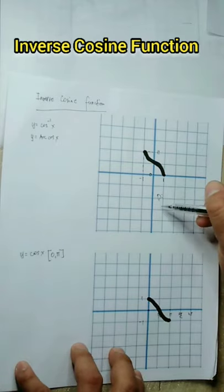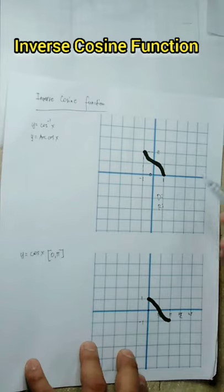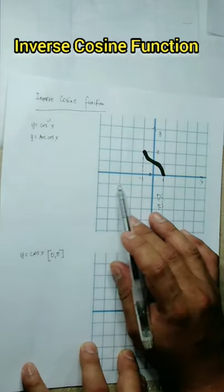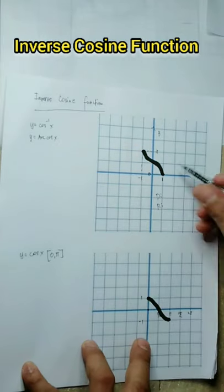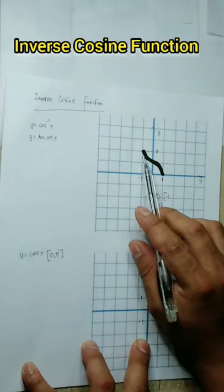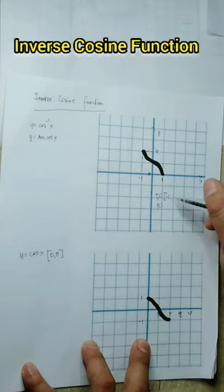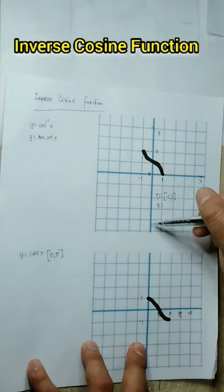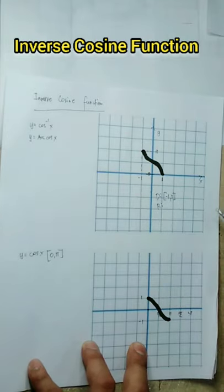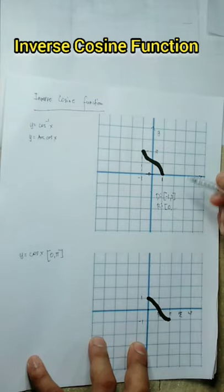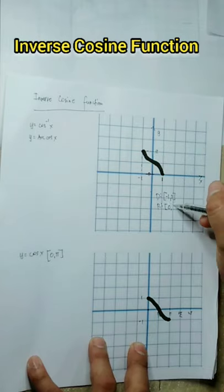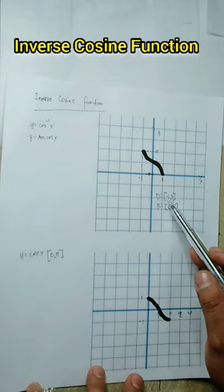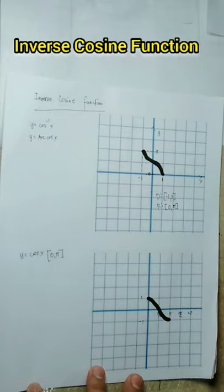Next, the domain and range of inverse cosine x. For the domain, looking at the x-axis: from negative infinity wala, nag-start sa negative 1 — included — continuous hanggang positive 1 — also included. So the domain is [−1, 1]. For the range, looking at the y-axis: from negative infinity wala, nag-start sa zero — included — continuous hanggang π — also included. So the domain of arccos x is [−1, 1] and the range is [0, π].